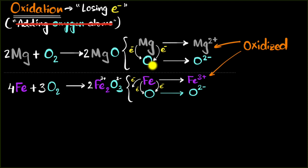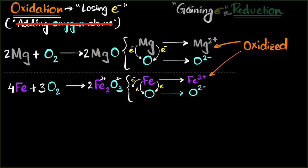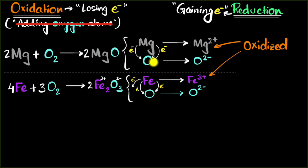If something loses electrons, something else should gain electrons. So we gave a name to gaining electrons as well — gaining electrons is what we call reduction. This sounds weird: you're gaining electrons, why do we call it reduction? Here's how I think about it: when you gain electrons, since electrons are negative, you're gaining negative charge. Oxygen had zero charge to begin with, but now it has a negative charge — that is in some sense a reduction. So gaining negative charge reduces your overall charge, and that's why we call it reduction.